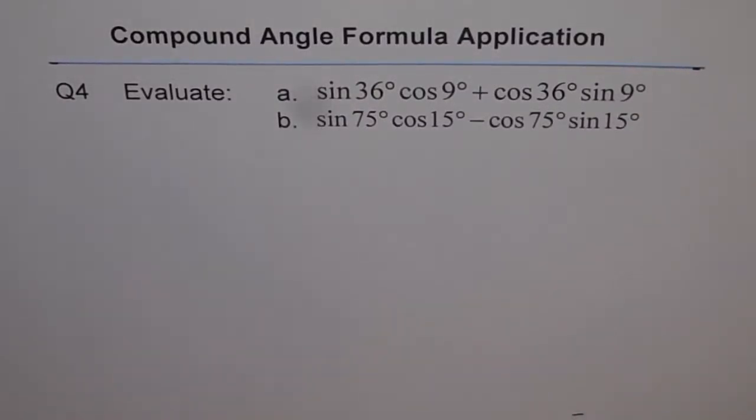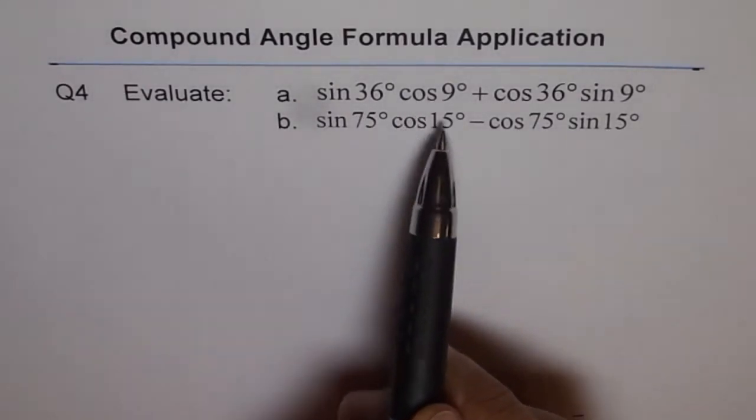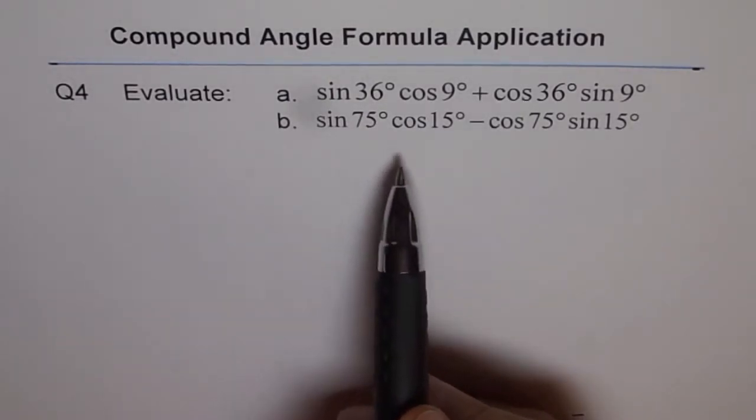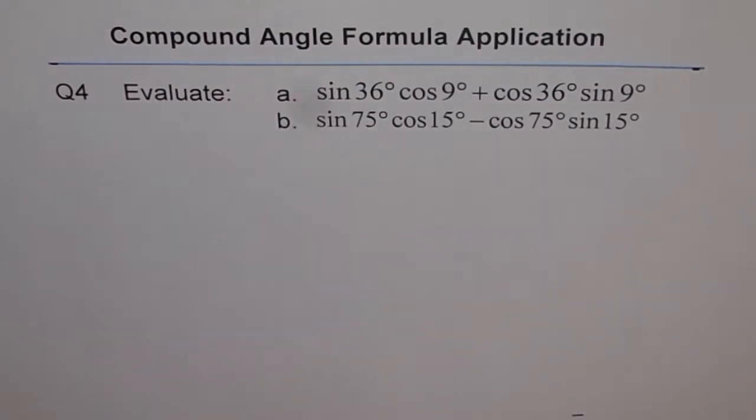Compound angle formula application, question 4. Evaluate A: sin 36° cos 9° plus cos 36° sin 9°, and B: sin 75° cos 15° minus cos 75° sin 15°.